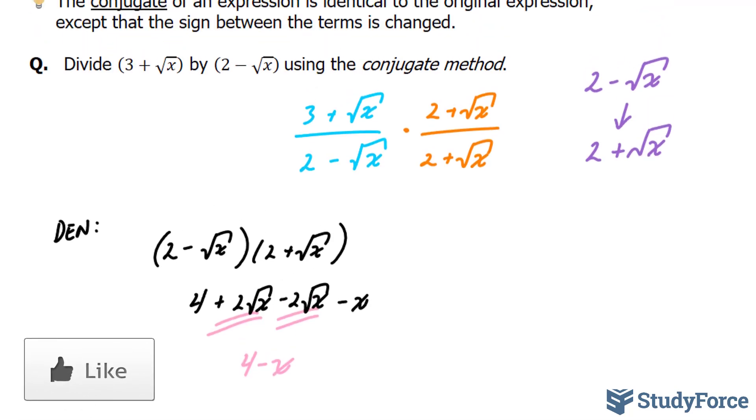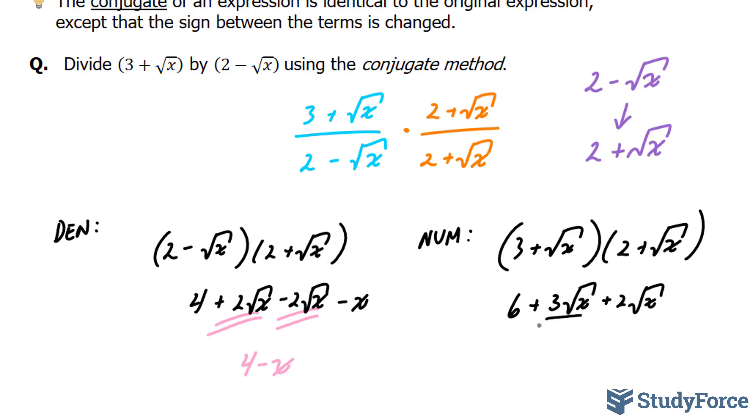Let's move on to our numerators. We have 3 plus the square root of x times that part. 3 times 2 is 6. 3 times the square root of x is plus 3 square root of x, plus 2 square root of x. Remember these are like terms. And this term times that term gives us plus x.